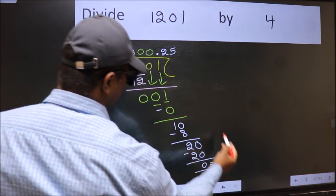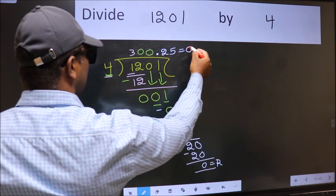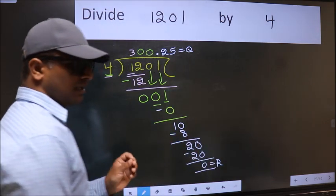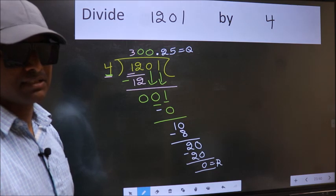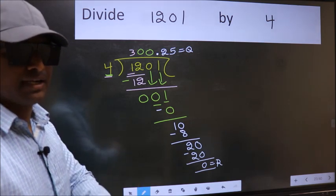This is our remainder, and this is our quotient. Did you understand where the mistake happens? You should not do that mistake.